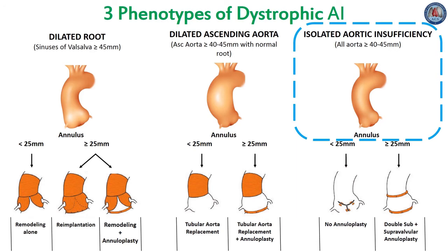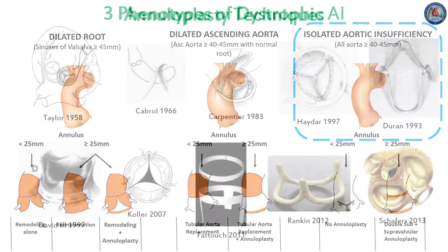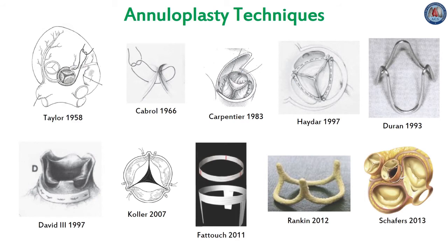Isolated AI is described when the sinus of Valsalva and the ascending aorta are both less than 40 to 45 mm. Despite the absence of significant aneurysmal disease, isolated dystrophic AI patients present almost constantly with an enlarged annulus or STJ as part of the dystrophic spectrum of AI lesions. Aortic annuloplasty was first performed to treat isolated AI by Taylor in 1958 — the so-called aortic circumclusion — where silk sutures were placed as a circumferential annuloplasty running underneath the coronary arteries on a beating heart. This operation quickly disappeared as the first aortic valve replacement was carried out only two years later. Since then, a number of different techniques of annuloplasty have been utilized with different outcomes.